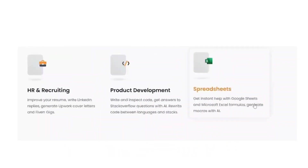Talking about HR and recruiting, it improves your resume. If you go to the webpage of some company, you can directly pass that link to Harpa AI to generate your resume. The resume will be developed based on the requirements of that particular company, so it's really a matter of a few minutes — it doesn't take much effort or time.